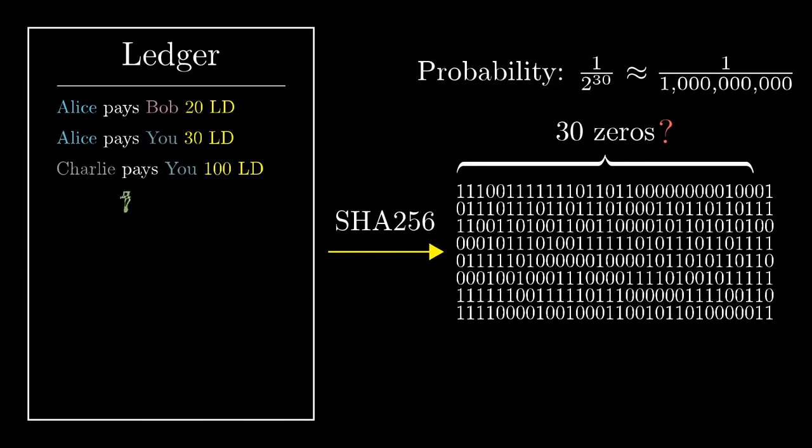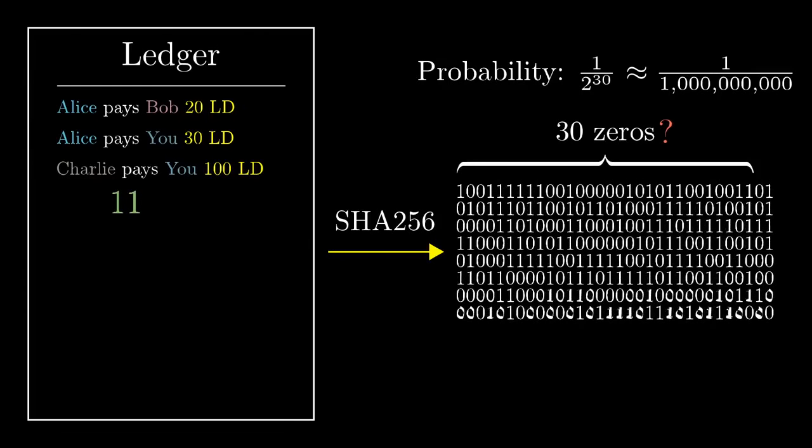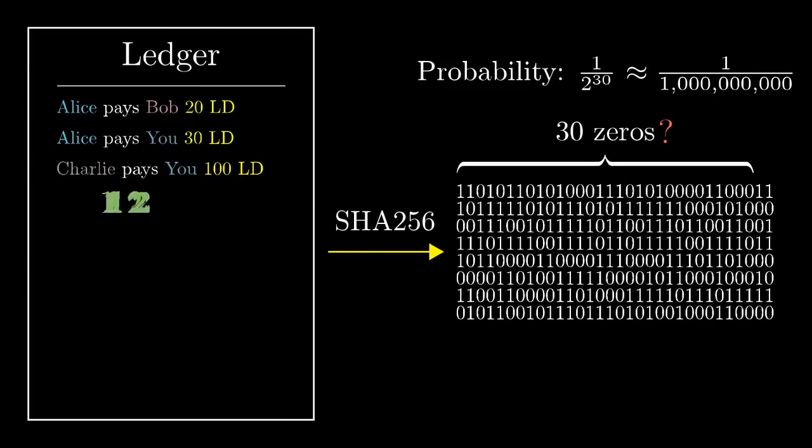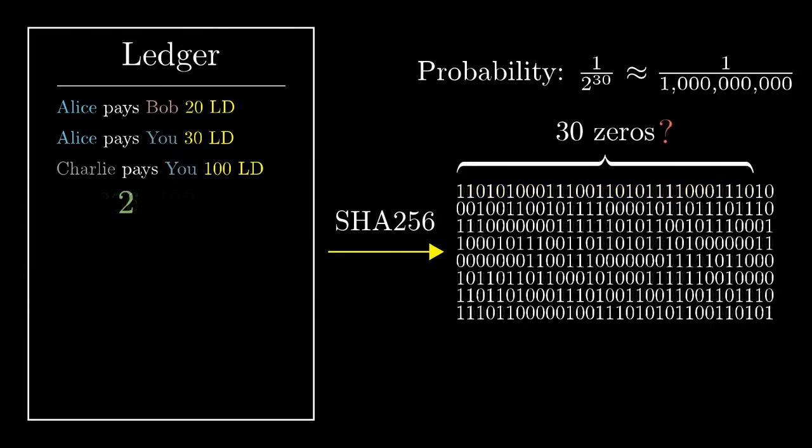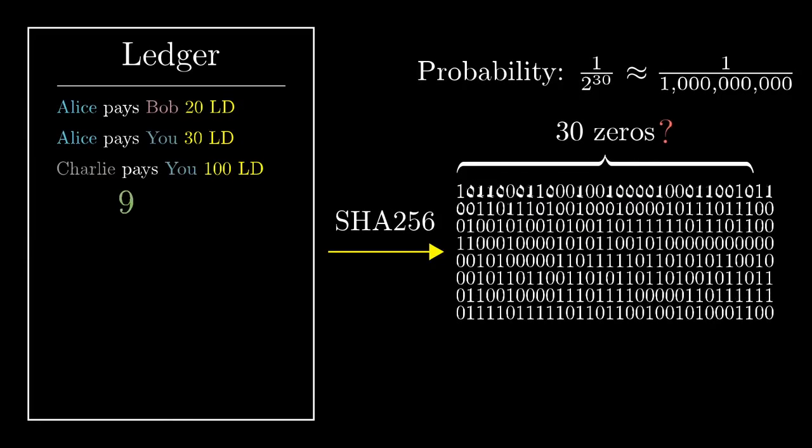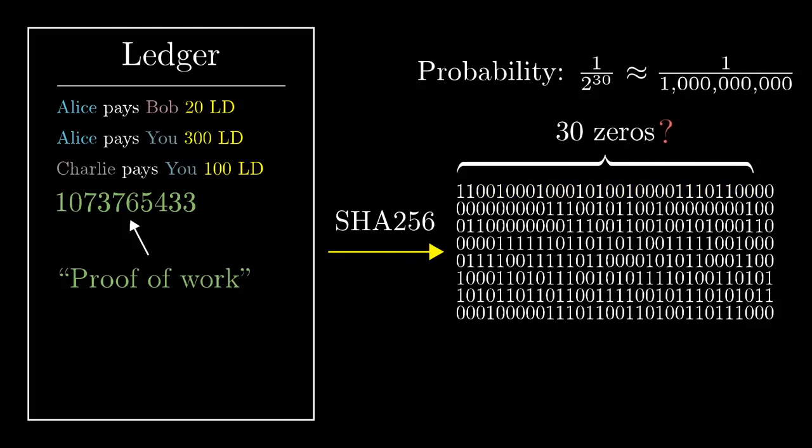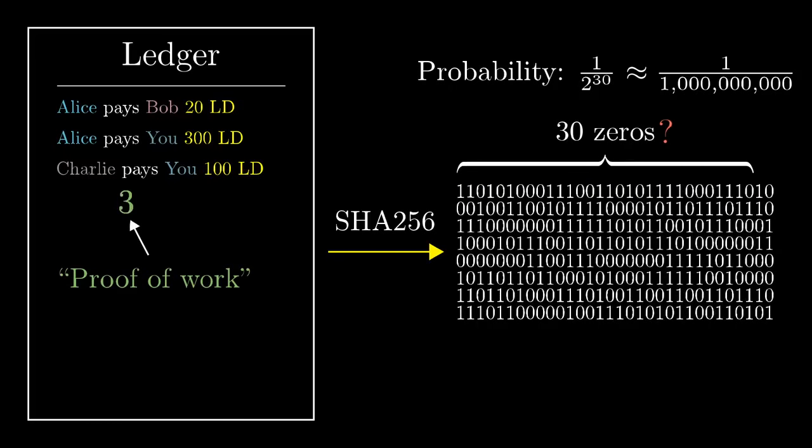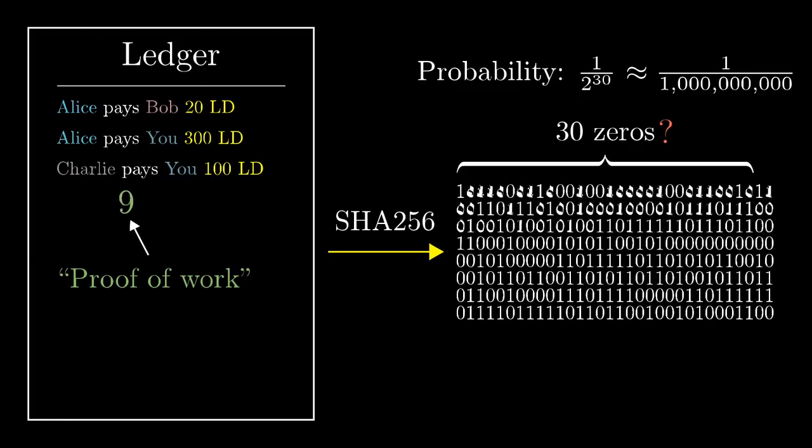So this person almost certainly had to go through about a billion different numbers before finding this special one. And once you know that number, it's really quick to verify. You just run the hash and see that there are 30 zeros. So in other words, you can verify that they went through a large amount of work, but without having to go through that same effort yourself. This is called a proof of work. And importantly, all of this work is intrinsically tied to the list of transactions. If you change one of those transactions, even slightly, it would completely change the hash. So you'd have to go through another billion guesses to find a new proof of work, a new number that makes it so that the hash of the altered list together with this new number starts with 30 zeros.